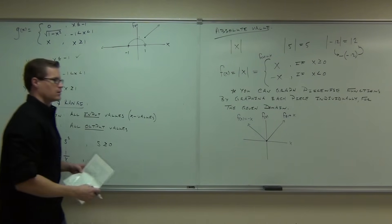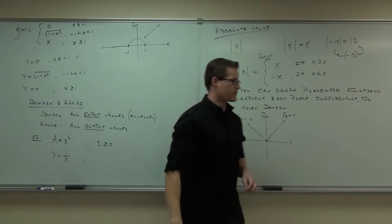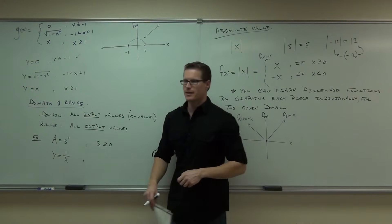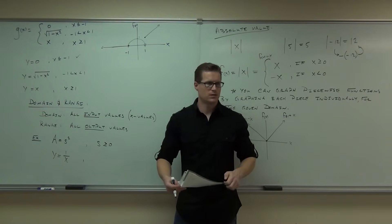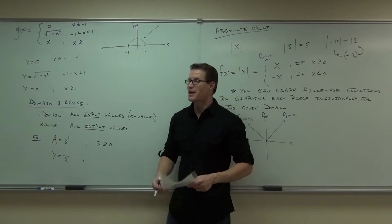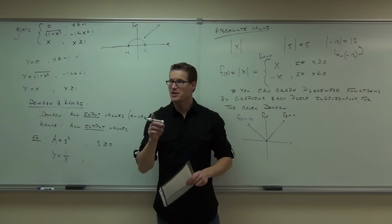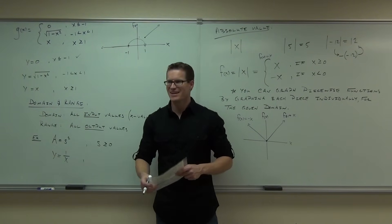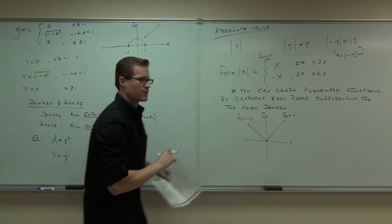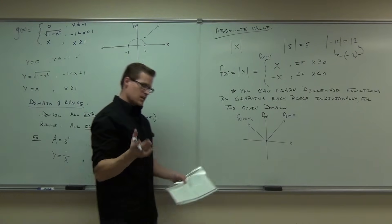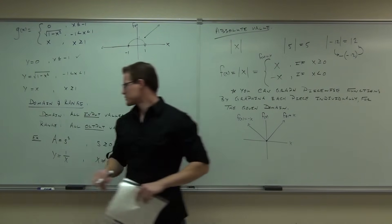We also have formulaic restraints. For y = 1/x, is there any number you can't plug in? Zero — you can't divide by zero. Any other number works — positive or negative — but not zero. For f(x) = √x, you can plug in zero (√0 = 0), but you can't plug in negatives. So x must be ≥ 0 for square roots, at least when working in real numbers.